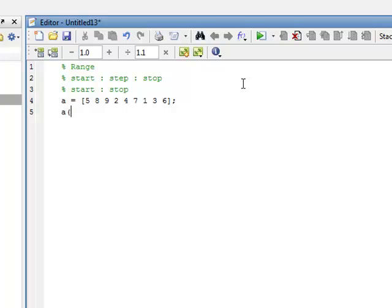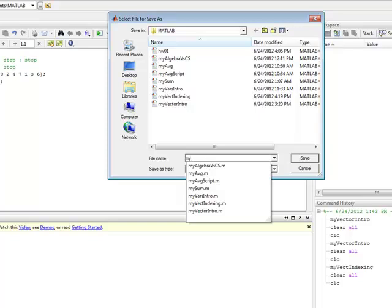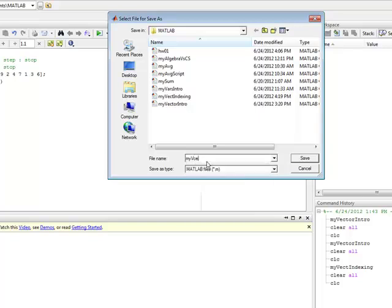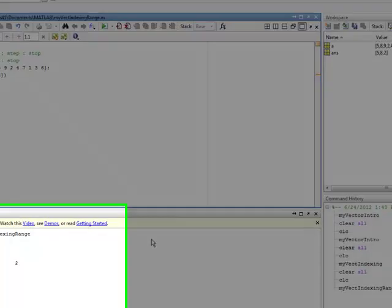So if we did A indexed at, so before, and the last thing we were doing numerically, we would just index A at one like this. Now we're going to index with a vector. So we put a vector in there, and we can index it one, two, four, and do that. Let's run that. It's going to ask me to save. I'm going to call this myVectIndexingRange.